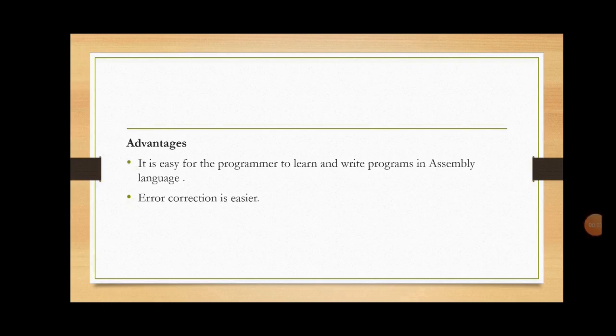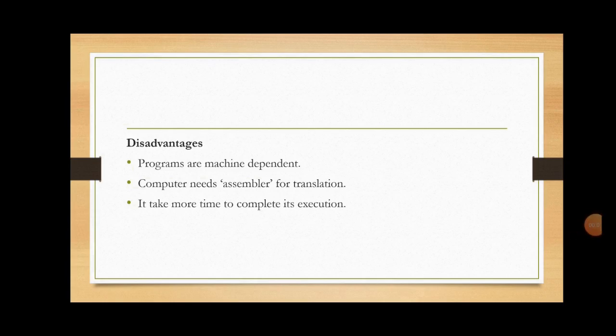The advantage of using assembly level language is that it is easy for the programmer to learn and write programs. The use of symbolic terms like ADD and SUB made error correction easier. However, the major drawbacks are that programs written in assembly level language are still machine-dependent, meaning a program written on one machine cannot be executed on another machine with a different architecture. Also, because of the translation process, the computer takes more time to complete program execution.